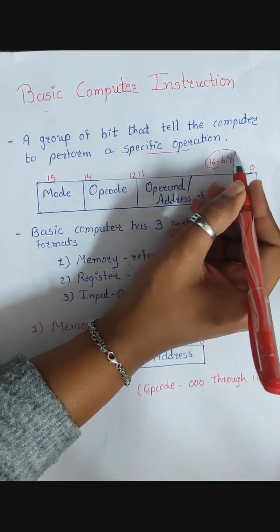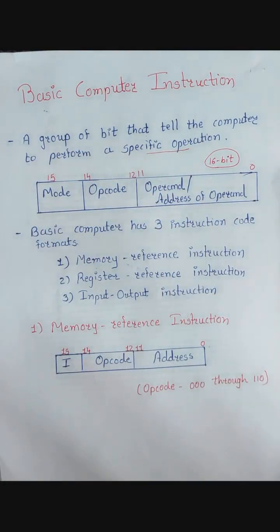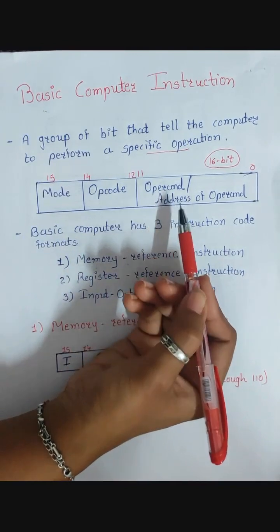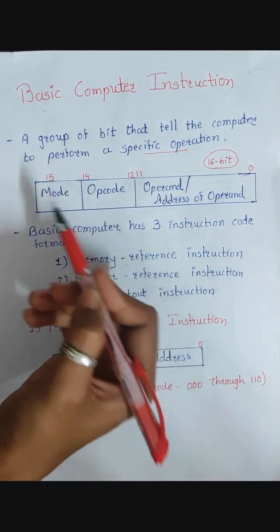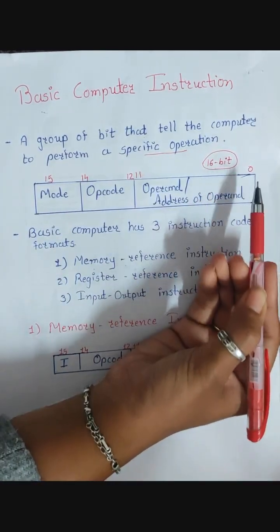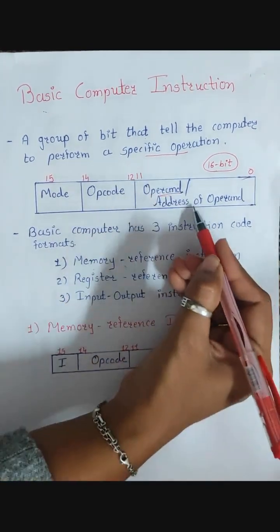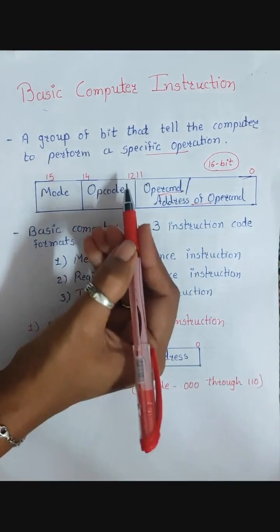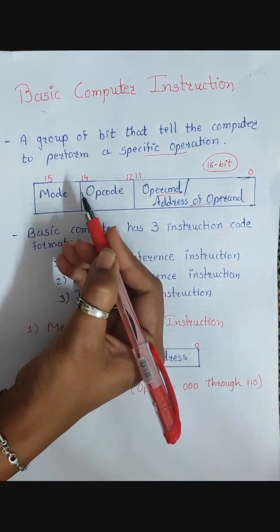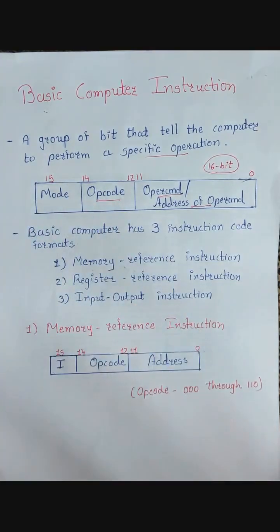In a basic computer we have a 16-bit instruction in which there are 3 parts: operand or address of operand, opcode, and mode. From those 16 bits, bits 0 to 11 — that's 12 bits — are used for the operand or the address of the operand. While bits 12 to 14 — that's 3 bits — are used for the opcode. Opcode is nothing but an operation code for a particular instruction that tells the processor what to do, which operation to perform.